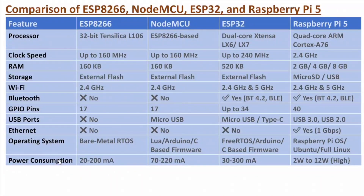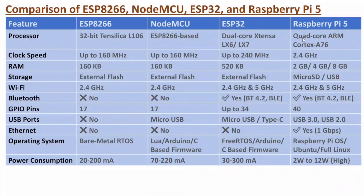If you talk about power consumption, ESP8266 consumes 20 to 200 milliampere, NodeMCU 70 to 220 milliampere, ESP32 30 to 300 milliampere, and Raspberry Pi 5 requires 2 to 12 watts — which is quite high. A range is shown because these modules have different modes: in idle mode they consume very low power, and in active mode they consume more power.